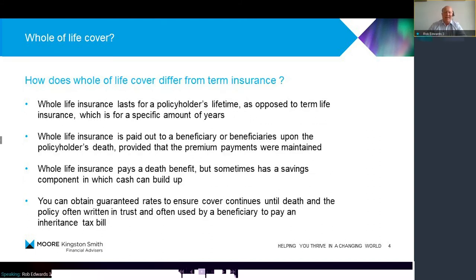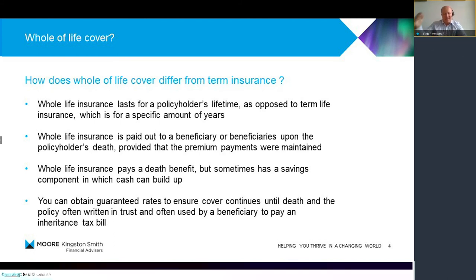Now let's move on to whole-of-life cover. How does that differ from term assurance? Well, whole-of-life insurance covers an amount of money, but not within a specified term — it covers your whole lifetime. This is often paid out to a beneficiary or a group of beneficiaries, provided you maintain the premium payments. It pays a death benefit and sometimes has a savings component in the policy in which cash may build up. Premiums rise every five years, and that helps keep the premiums lower than they would otherwise be. A lot of guaranteed policies are advised, and this is often used with inheritance tax planning to pay a beneficiary on your death — really to pay the inheritance tax that will be due.